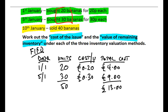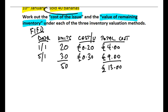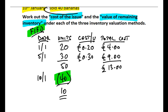Dealing with receipts is relatively straightforward — you just add units and total value. The harder part comes with sales or issues of inventory, because this is where we need to apply our inventory valuation method. On the 10th of January we're selling 40 bananas, so by the end of January we'll be left with 10 units. But we need to value those 40 bananas under FIFO — first in is first out, so we sell the oldest bananas first.